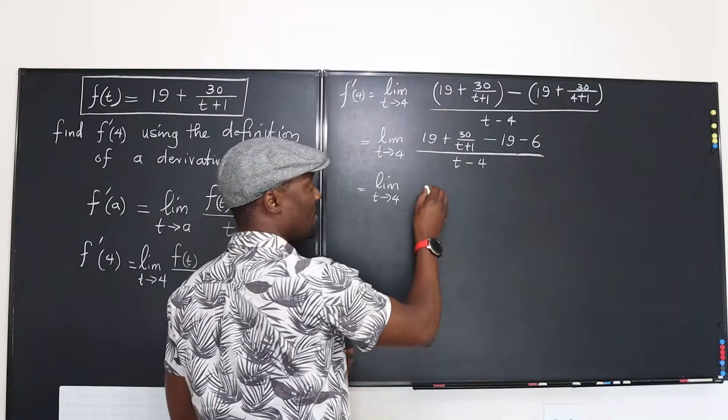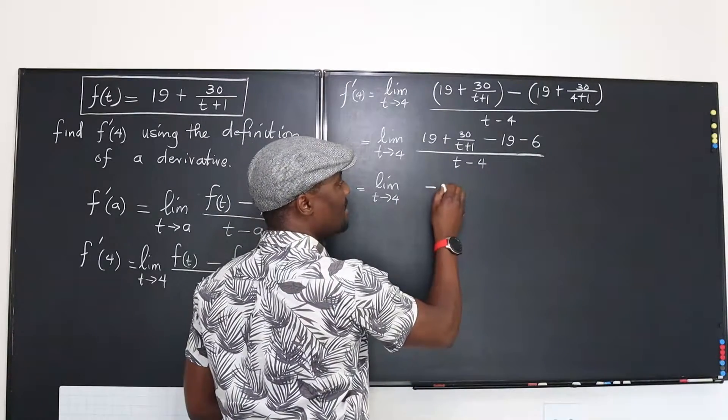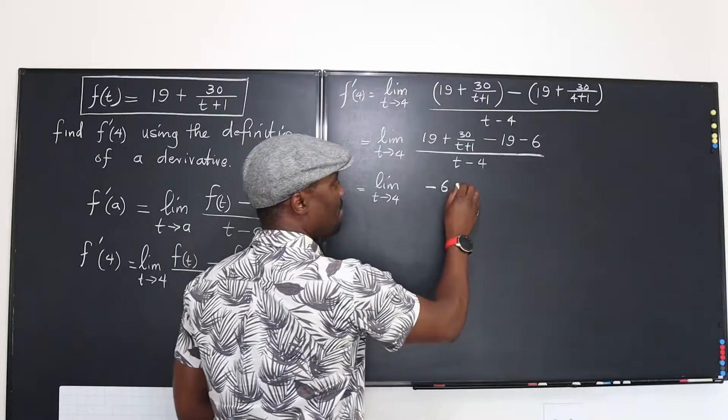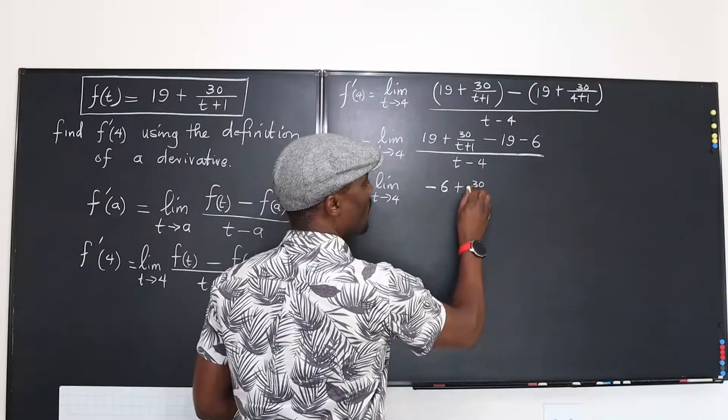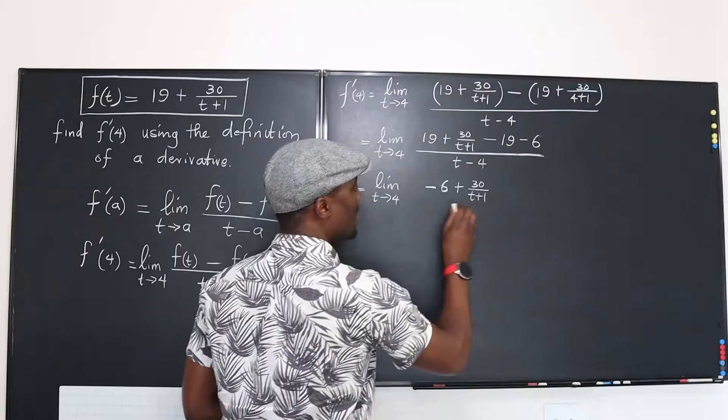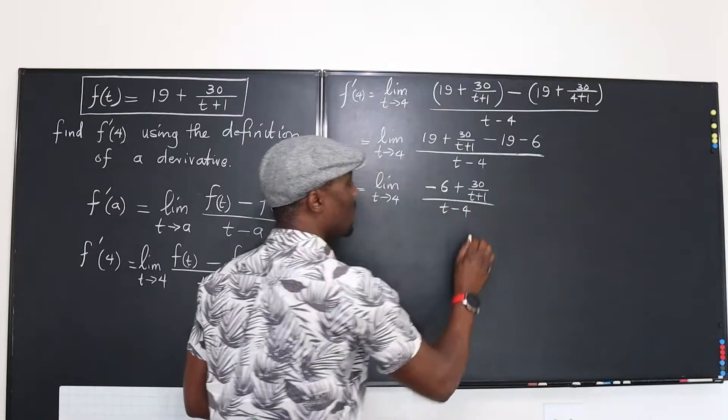So you're going to have, I'm going to put the negative number in front. So you're going to have negative 6 plus 30 over t plus 1 divided by t minus 4.